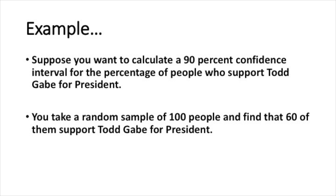Suppose we want to calculate a 90% confidence interval for the percentage of people who support Todd Gabe for president. We'll take a random sample of 100 people, and from that sample we find that 60% of those people support Todd Gabe for president. So that's a sample proportion of 60%. For our margin of error we'll use a 90% confidence level, which determines the z-score.